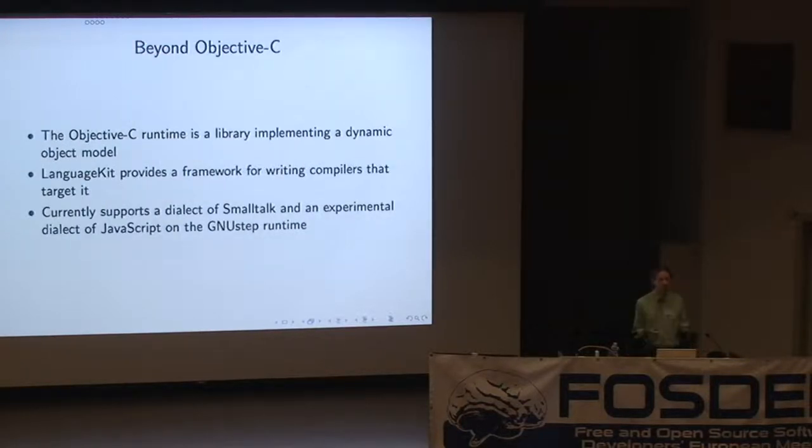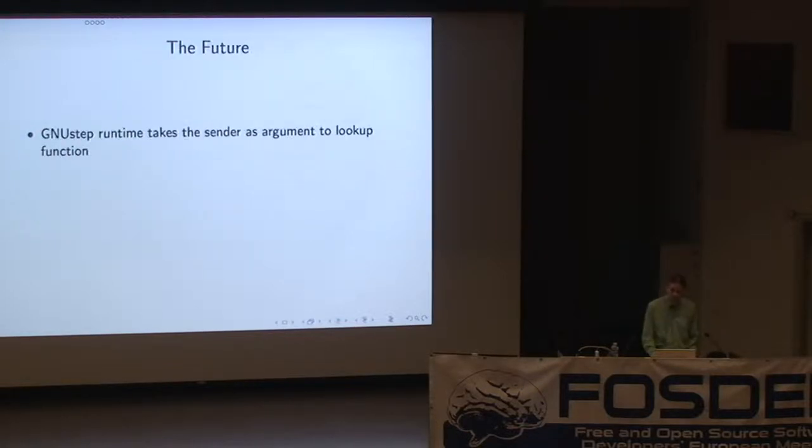And we can go beyond Objective-C. Yesterday I gave a talk about LanguageKit, and that's another compiler built on top of LLVM, giving you an abstract syntax tree for Smalltalk-like languages. So we can implement Smalltalk, and we can implement a dialect of JavaScript. On top of the same runtime, sharing the same object, you can take an Objective-C class. You can subclass it in Smalltalk. You can then use that as a prototype in JavaScript, and it's all compiled down to machine code. There's no virtual machine, and it's pretty magic.